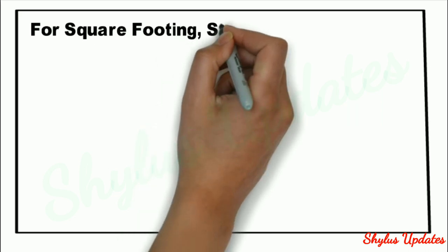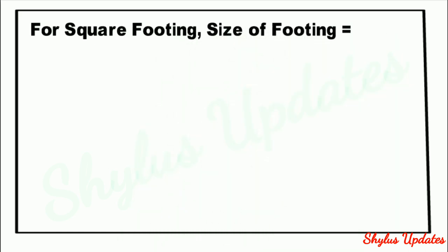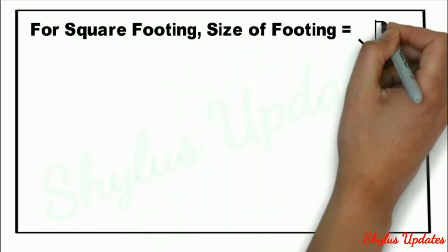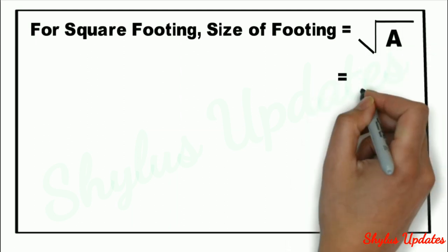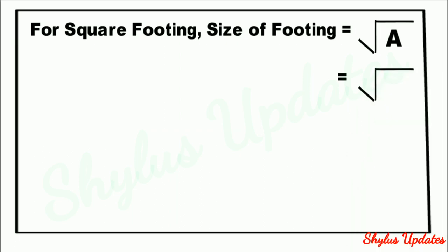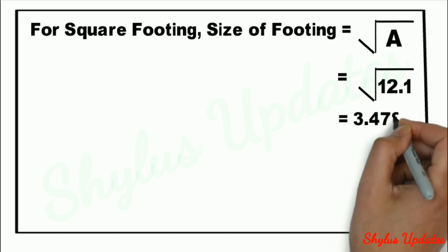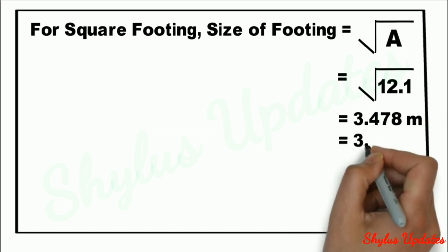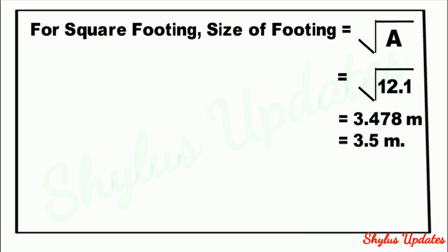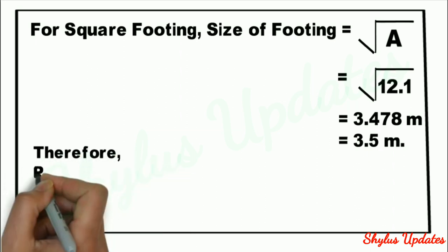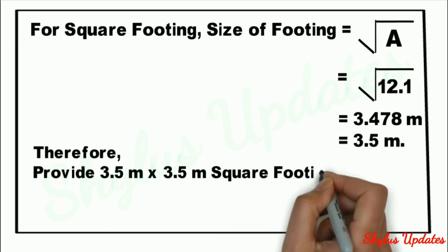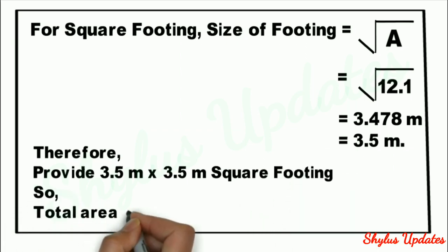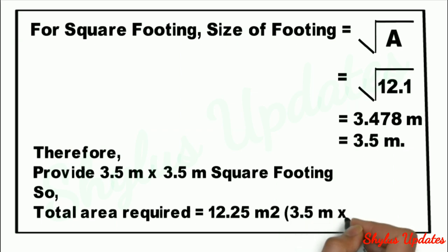For a square footing, size of footing is equal to the square root of A. When we take the square root, we get 3.478 meters, which is approximately equal to 3.5 meters. Therefore, provide 3.5 m × 3.5 m square footing. So total area provided is equal to 12.25 m².